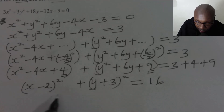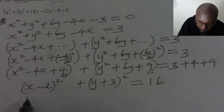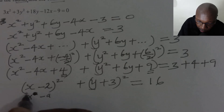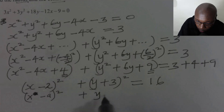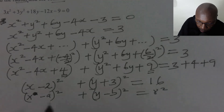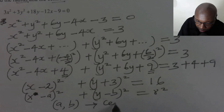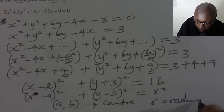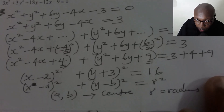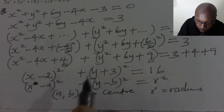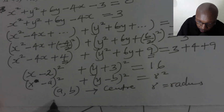After getting that, you notice that this is the standard equation of a circle. The standard equation of a circle is given by x minus a squared plus y minus b squared equals r squared. So you can compare these terms, where a and b give the center, and r is the radius. Comparing, negative a equals negative 2, so a equals 2.